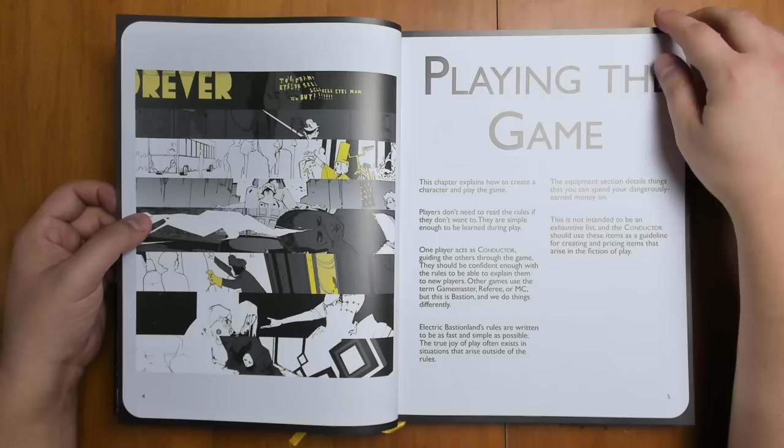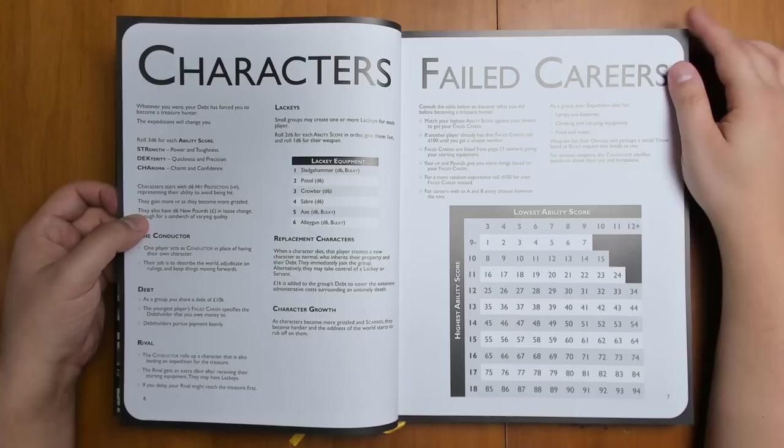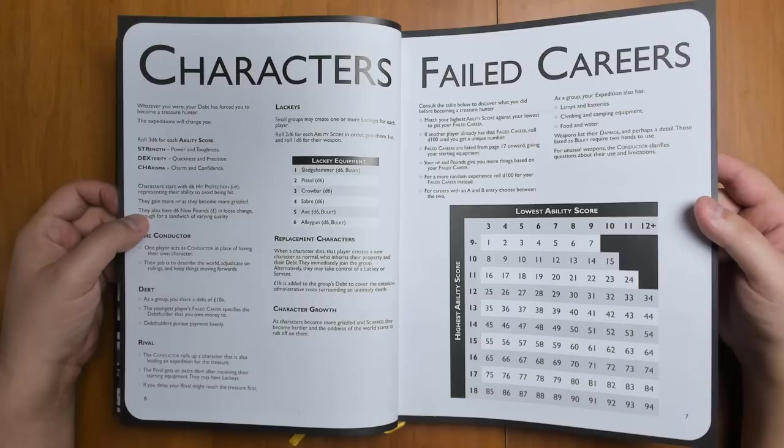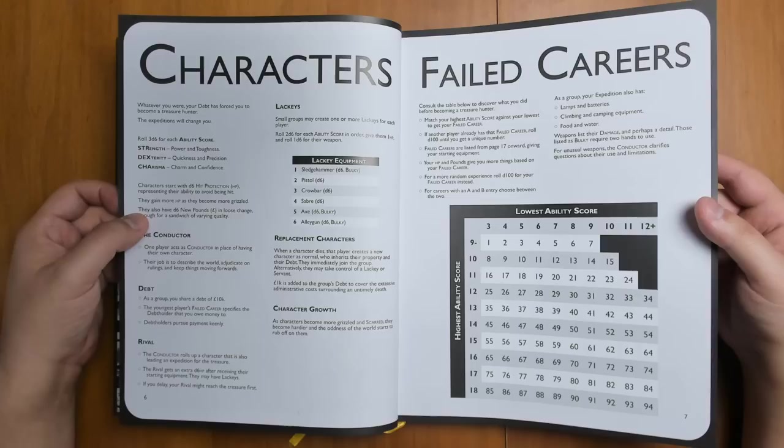Nice short summary on playing the game. The GM is called the Conductor here. And we get into how to make a character. Just like in Into the Odd, this is very quick and easy to generate a character. You're rolling 3d6 for your ability scores. You're rolling a d6 for your hit protection, aka your hit points. You can get more hit points as you become more grizzled, but it doesn't happen all that often. Characters are fairly static.